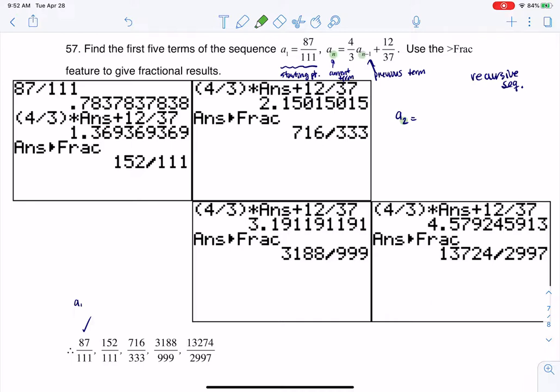This would be 4 thirds times A sub 2 minus 1 plus this 12 over 37 number, so this would be 4 thirds times A sub 1 plus 12 over 37. But keep in mind, we knew A sub 1, we already knew A sub 1. Yes, it's ugly, but I can still plug it in, so this becomes 4 thirds times 87 over 111 plus 12 over 37.